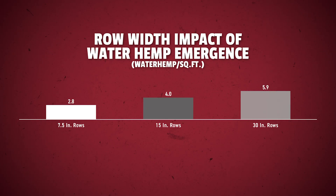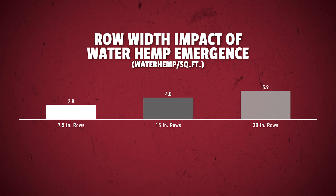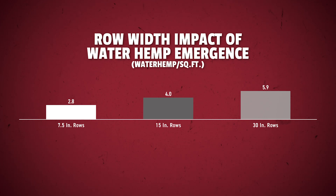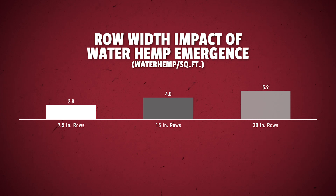PFR proven data shows narrow rows can help reduce waterhemp pressure in untreated checks. In this study, 15-inch row widths averaged 31% fewer waterhemp compared to 30-inch rows. The narrow rows allow for faster canopy closure, making that herbicide program more successful.